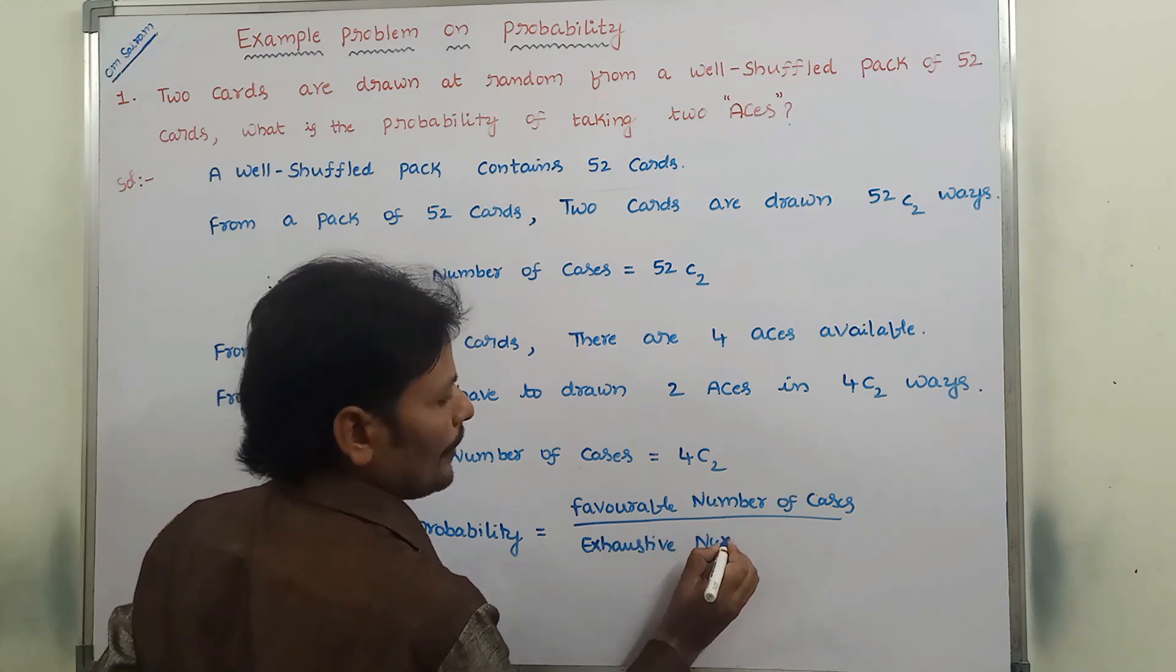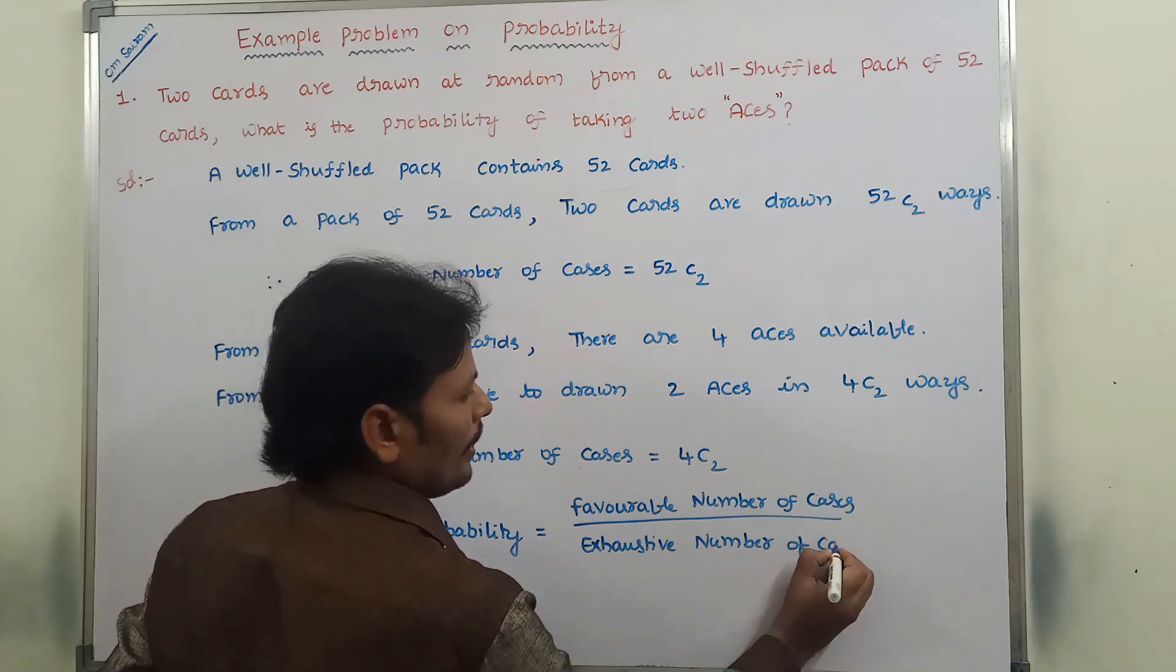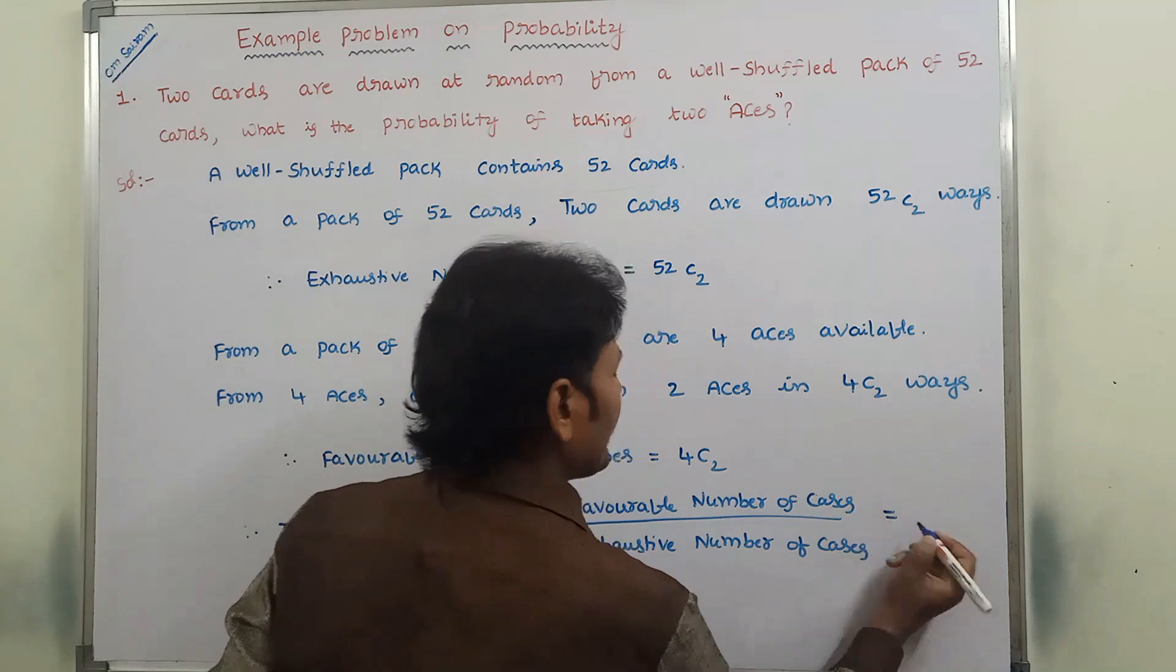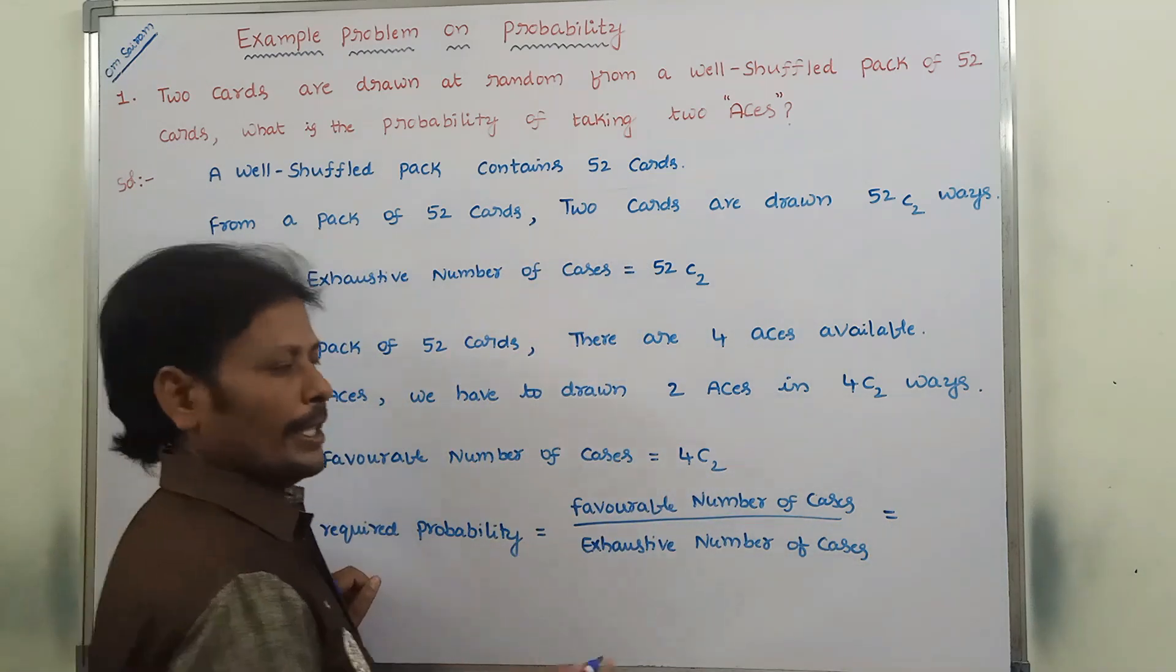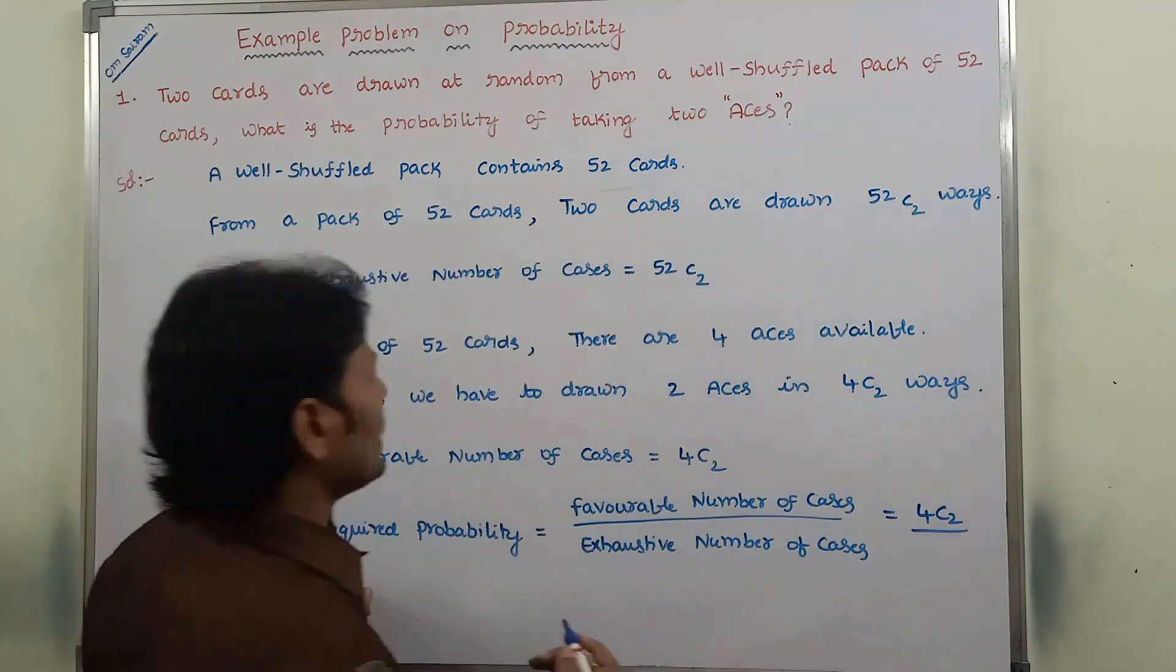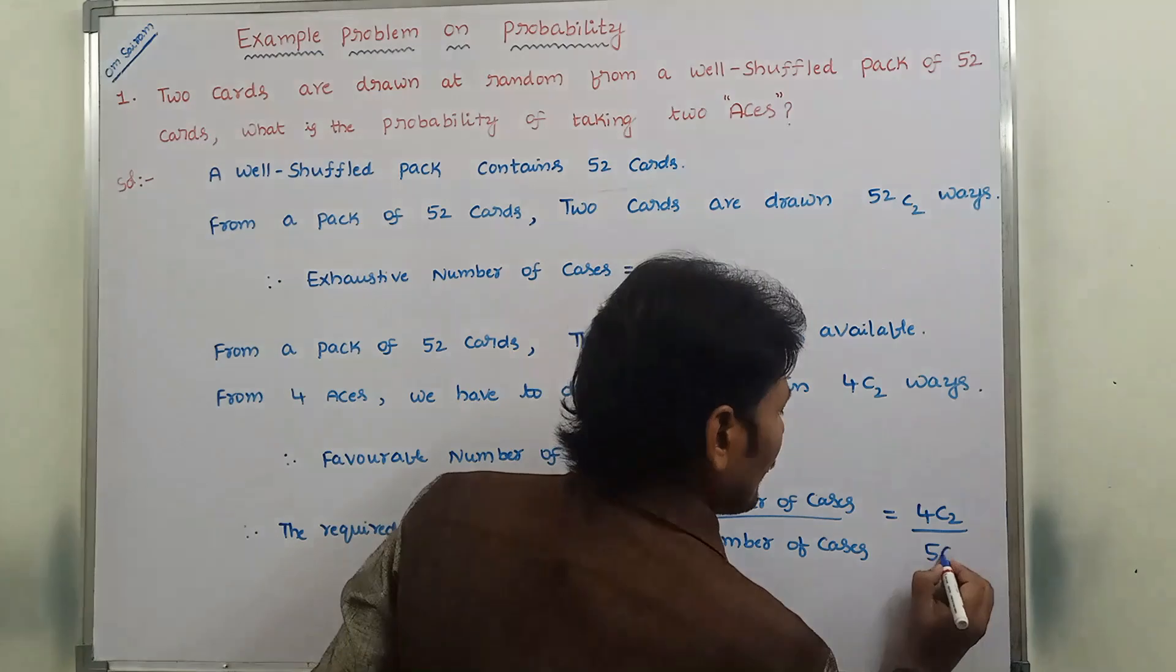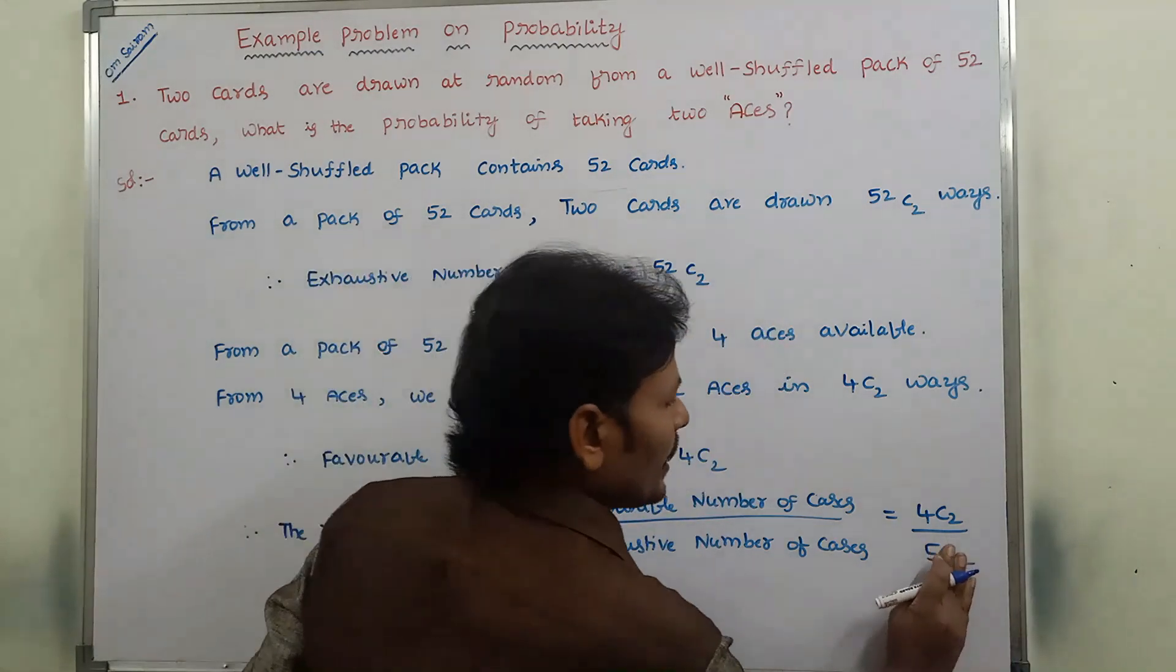Favorable number of cases is 4 C 2. Exhaustive number of cases is 52 C 2.